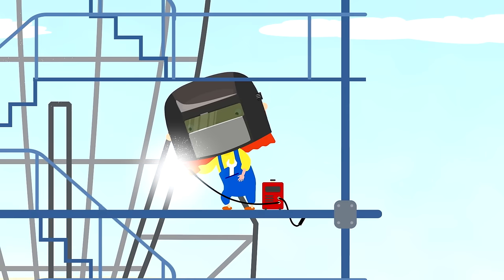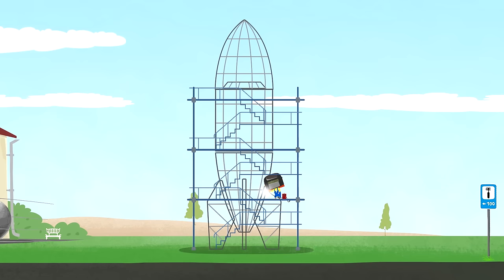Now for the rocket frame. Dr. McWheely assembled the rocket frame by connecting metal pipes using a welding machine.